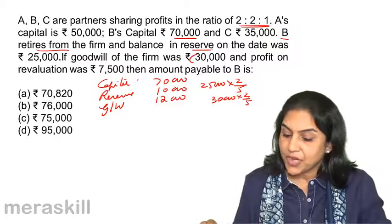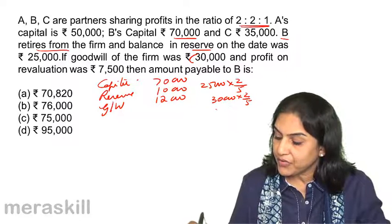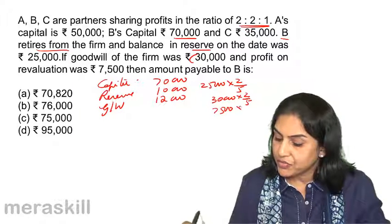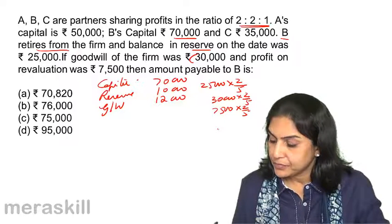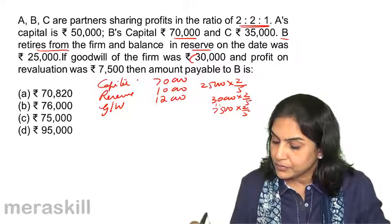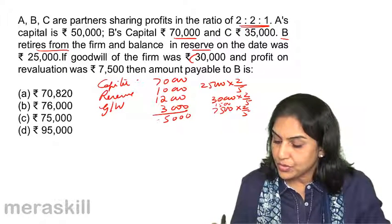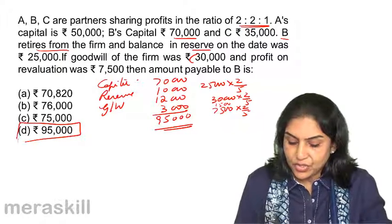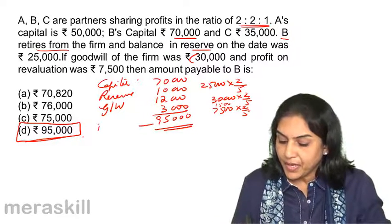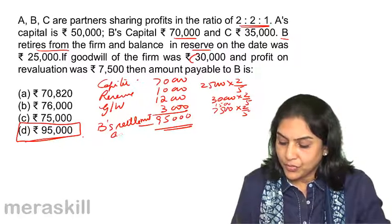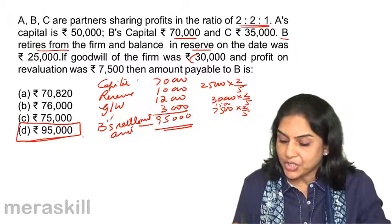Goodwill is taken care of. Next, revaluation profit was Rs 7,500. So Rs 7,500 into 2/5, that is Rs 3,000. So what would be the total dues? Rs 95,000. B's settlement amount would be capital plus reserve plus goodwill plus his share of revaluation profit: 70,000 + 10,000 + 12,000 + 3,000 = Rs 95,000.